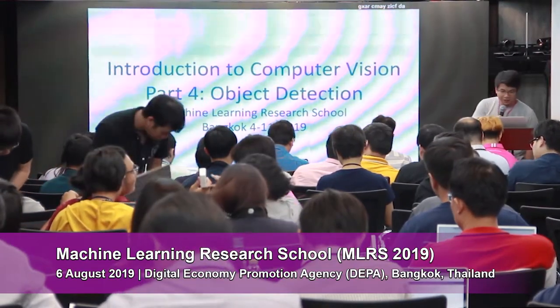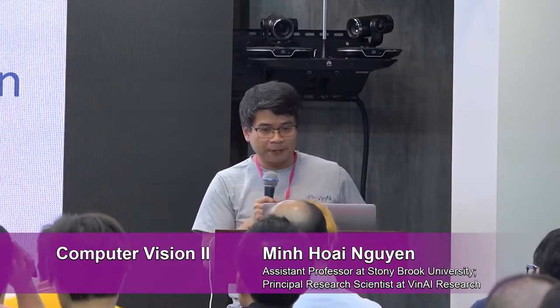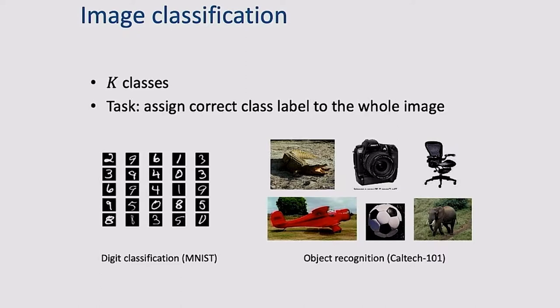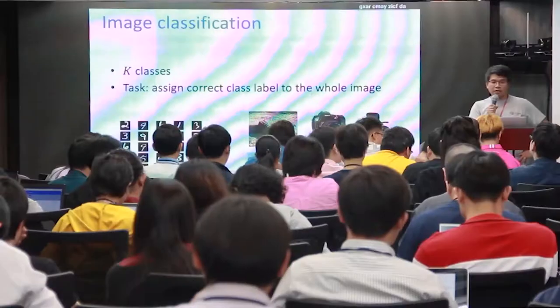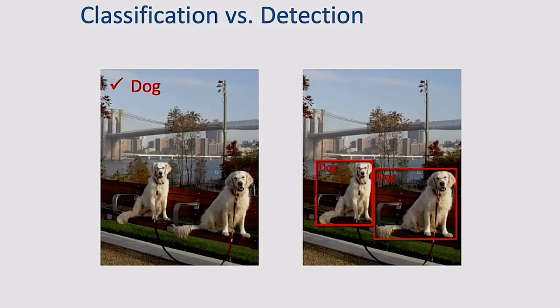Welcome back. This afternoon I'll be talking about object detection and object tracking. So far, the problems we've been working with were image classification — you have K classes and the task is to assign the correct class label to the whole image. There's a big difference between classification and detection. Detection involves both classification and localization: given an image, we want to localize all instances of object categories and also recognize them.